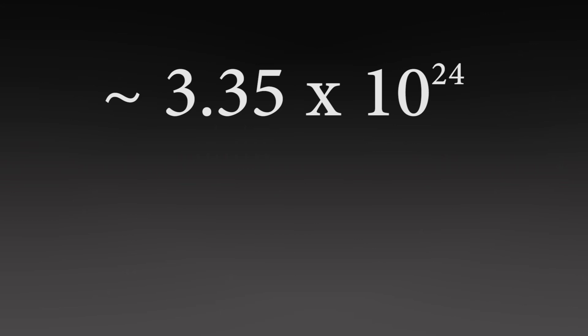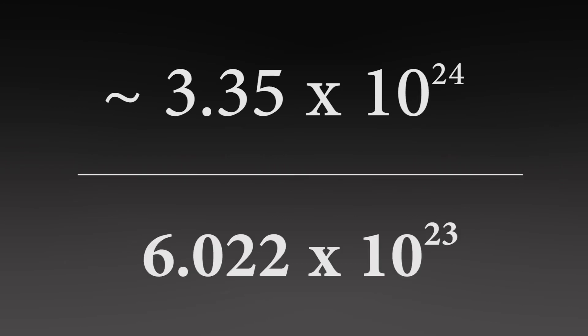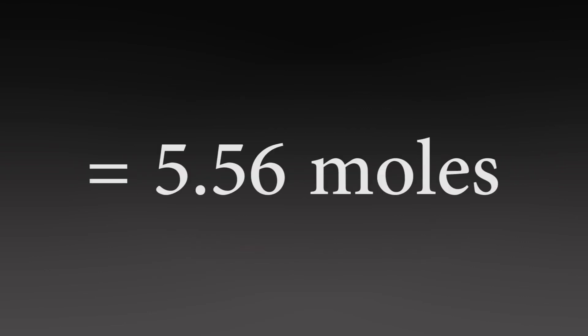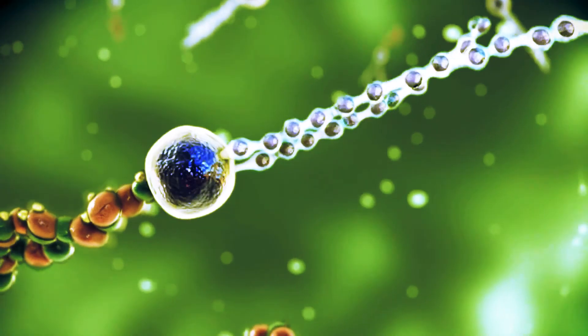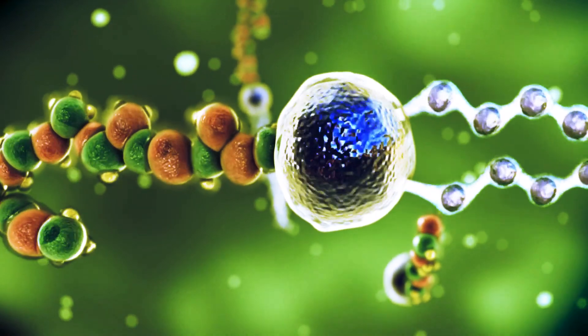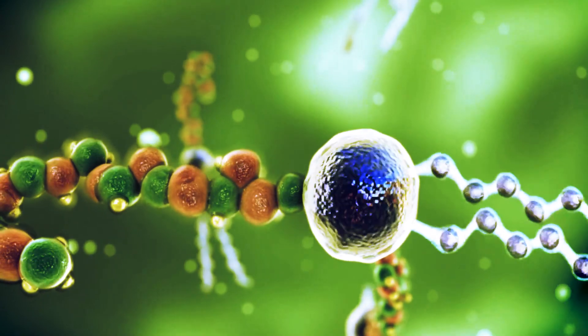Large numbers like this are difficult to work with individually, so we condense them into this number called Avogadro's number. Avogadro's number allows us to go from a whole bunch of zeros to single numbers in moles. For example, if we have 3.35 times 10 raised to the 24 water molecules, we can divide by Avogadro's number — 6.022 times 10 raised to the 23rd molecules per mole — and what we get is approximately 5.56 moles of water. This is how we convert large numbers like molecules and atoms into single numbers like moles.